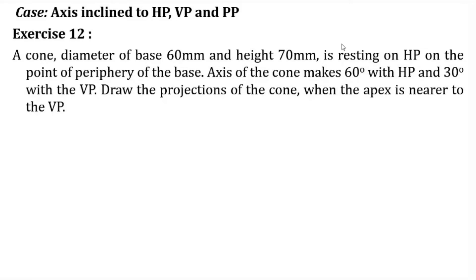In the third stage, when we apply the 30° inclination to VP, we cannot directly give 30° because the axis is no longer parallel to HP — it is already inclined at 60° to HP. So we have to find out the apparent inclination using the actual inclination and the true length. Based on the apparent inclination, we draw the third top view.